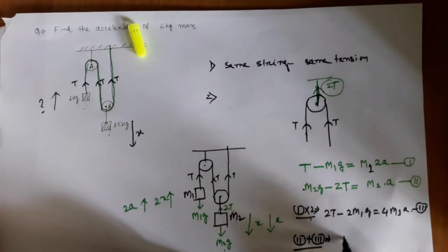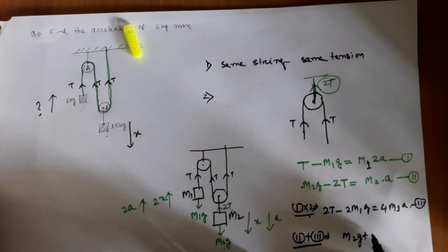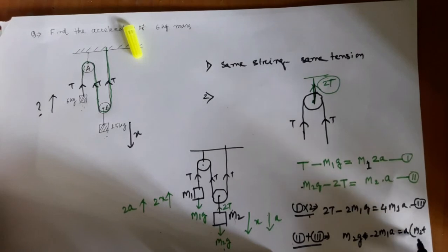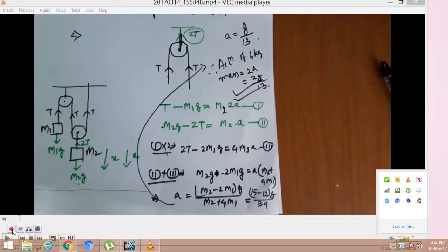Now, summing up equations 2 and 3, we get M2·g minus 2M1·g... So I have a shoulder problem, you can see here.